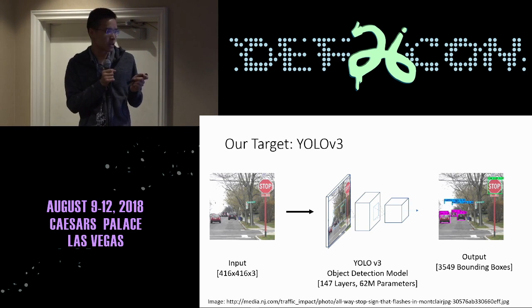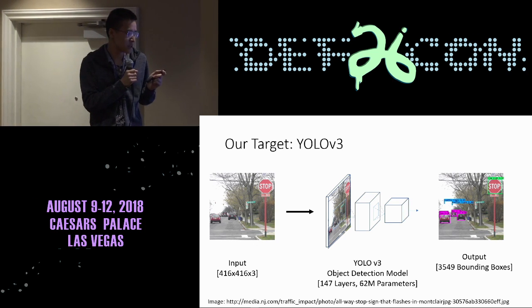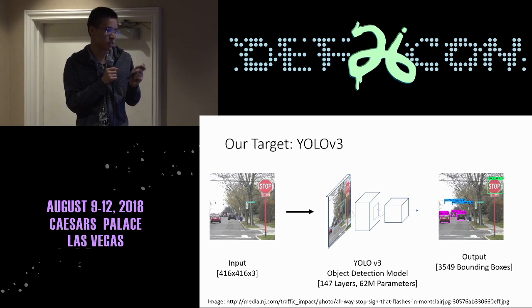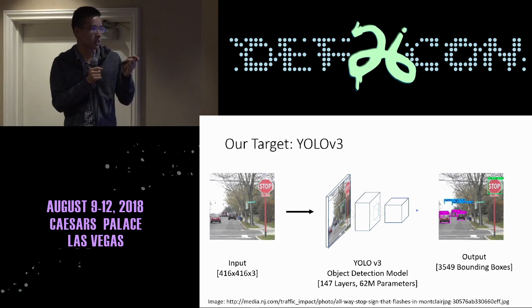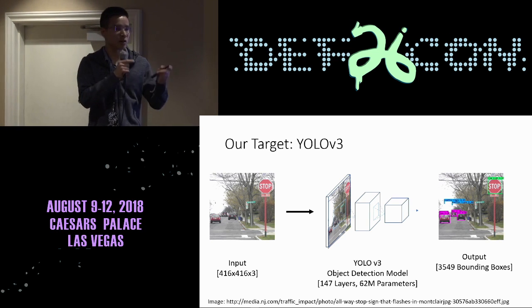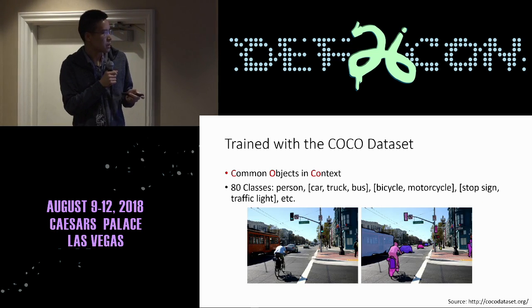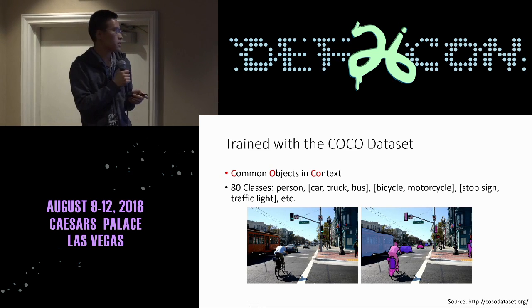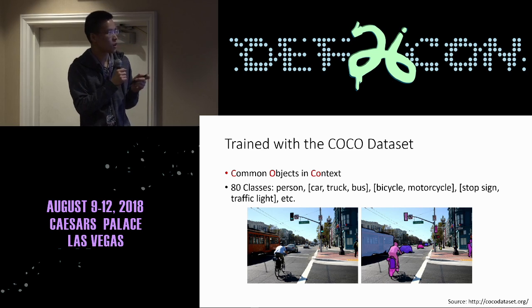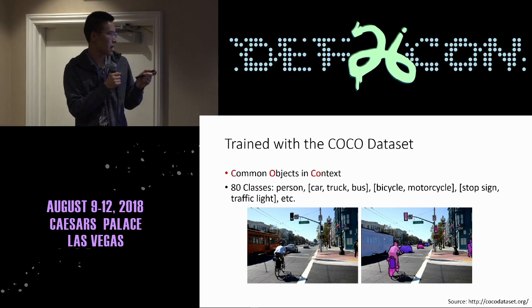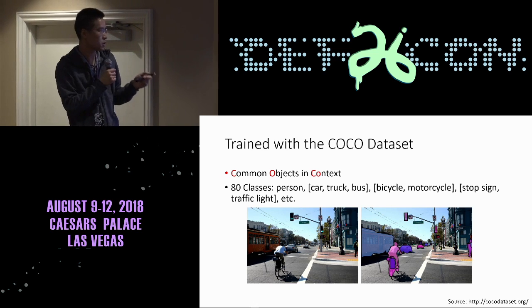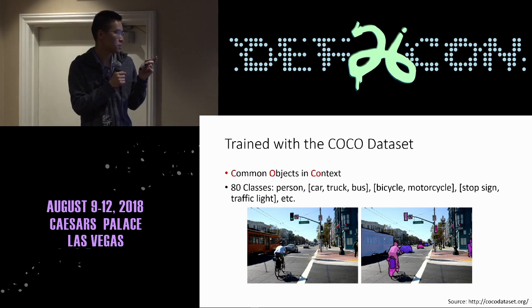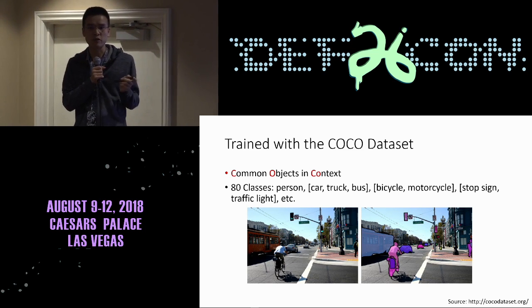YOLO V3 is a very large and complicated model. It can output 3,549 bounding boxes. Of course, we only show the bounding boxes with high confidence, such as the stop sign on the corner. The target model we use here was trained with the MS COCO dataset, so it has 80 classes in total. But here we only focus on those important classes such as person, car, truck, bus, bicycle, and motorcycle, because those are more related to self-driving cars.